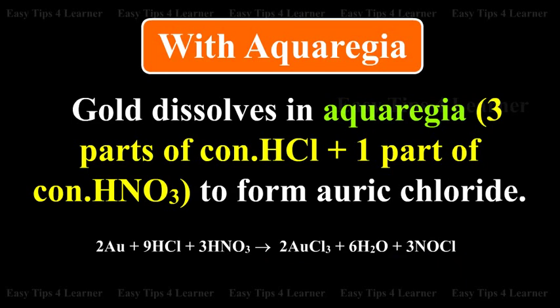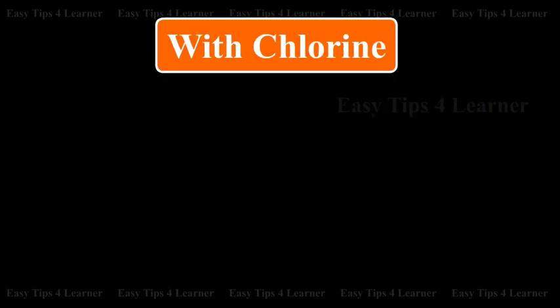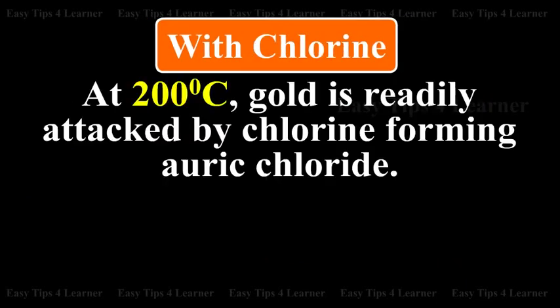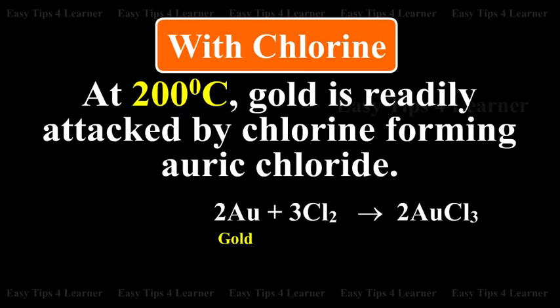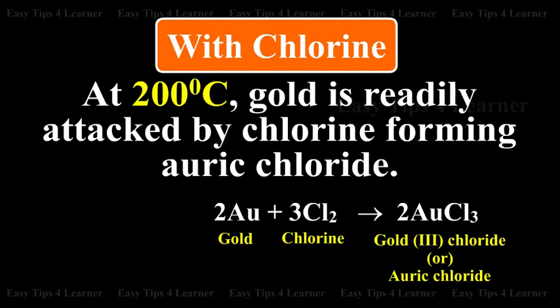With chlorine: At 200°C, gold is readily attacked by chlorine, forming auric chloride. The reaction is: Gold + chlorine gives gold(III) chloride (auric chloride).